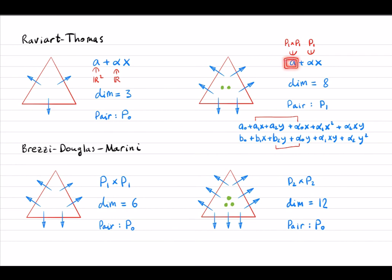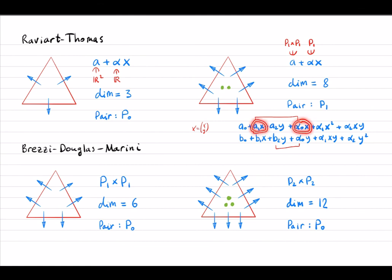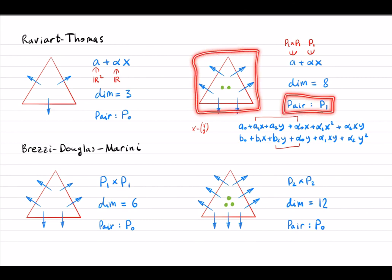Writing x as having two components x and y, and a as a two-component linear polynomial, we see that terms can be combined: a1x can be merged with alpha times x-component, and similarly for y. Without loss of generality we can take alpha-zero equal to zero, giving eight degrees of freedom. The divergence of such a vector field is in p1, so the pair for the first-order Raviart-Thomas elements is discontinuous piecewise affine elements.